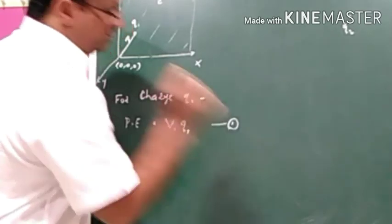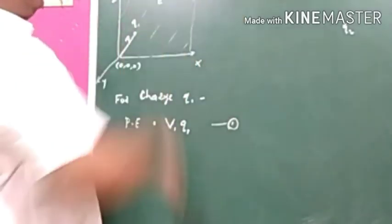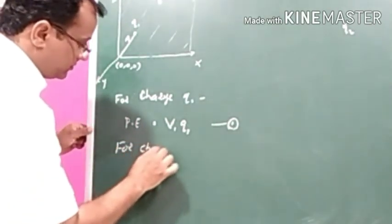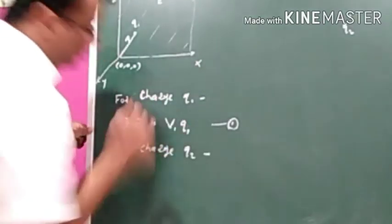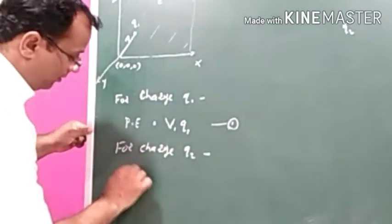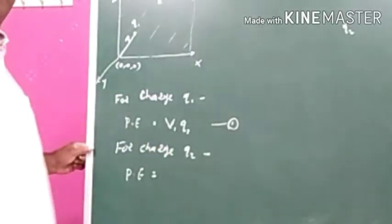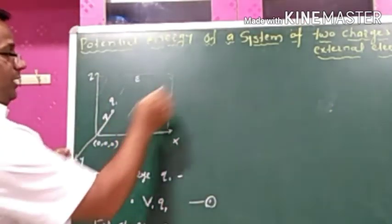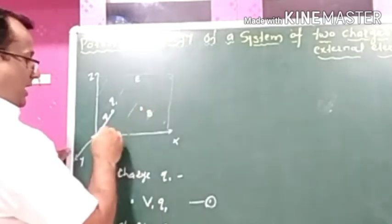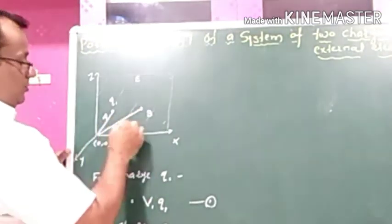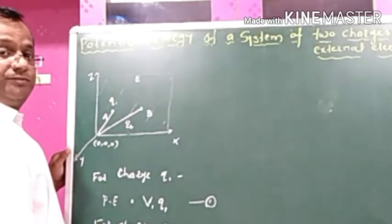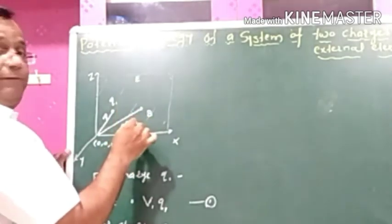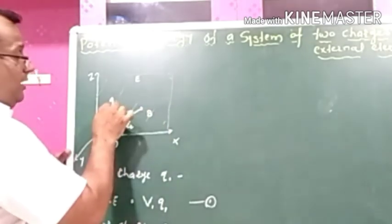Now we want to bring the second charge q2. The potential energy for q2 is found by bringing the charge from an infinite position and placing it inside the electric field at point B. The distance of point B from the origin is r2. The external electric field produces a potential at point B.